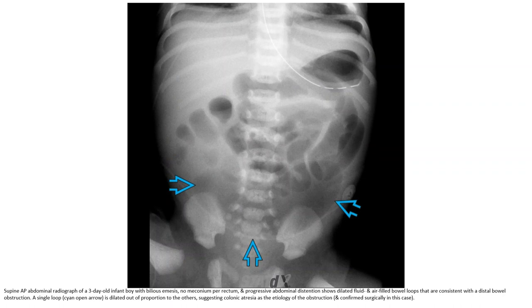Supine AP abdominal radiographs of a three-day-old infant with bilious emesis, no meconium per rectum, and progressive abdominal distension show dilated fluid-filled bowel loops consistent with distal bowel obstruction. A single loop is dilated out of proportion to the others, suggesting colonic atresia as the etiology of the obstruction, which was confirmed surgically in this case.